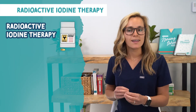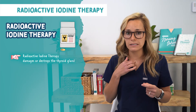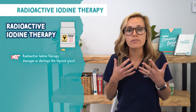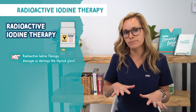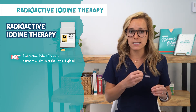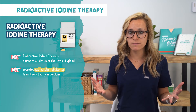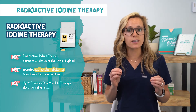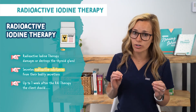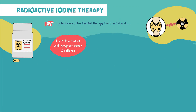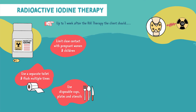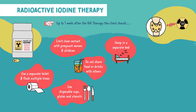For radioactive iodine therapy, this actually damages or even destroys the thyroid gland. This is done intentionally because our patients have hyperthyroidism — the thyroid gland is producing too much, so we want to calm it down. After ingesting radioactive iodine, the client secretes radioactive substances through urine, saliva, and sweat. So there are education points you need to teach your patient: limit contact with pregnant women and children, use a separate toilet and flush multiple times, use disposable cups, plates, and utensils, don't share food or drinks, sleep in a separate bed, don't sit near others for long periods of time, don't travel on airplanes or trains, wash laundry separately, and don't breastfeed.